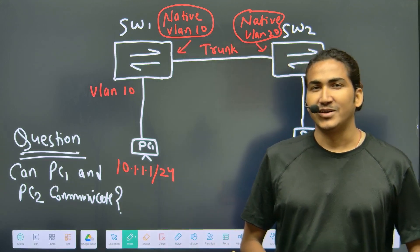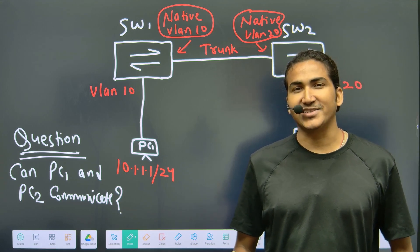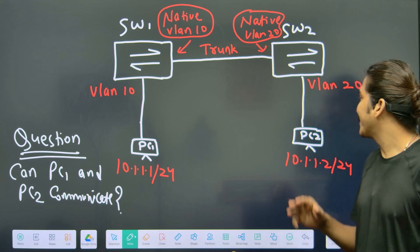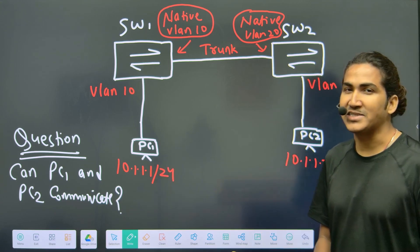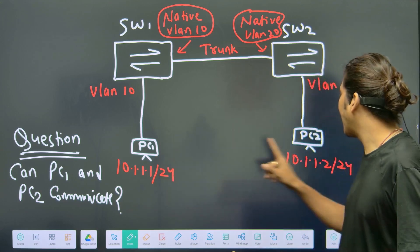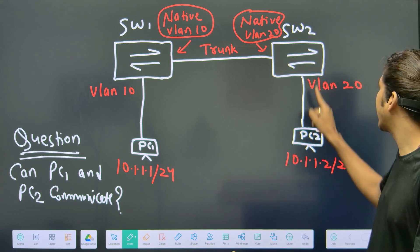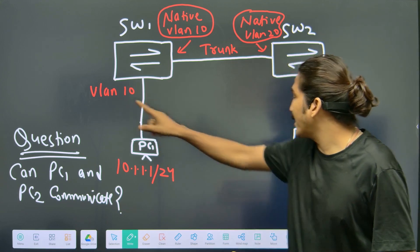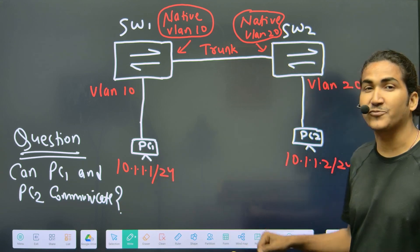Welcome to the scenario-based network engineer interview question and answer series. Today's scenario has two switches and two PCs. PC1 is connected with Switch 1 and PC2 is connected with Switch 2. PC1 is in VLAN 10 and PC2 is in VLAN 20, but both are using IP addresses from the same subnet.